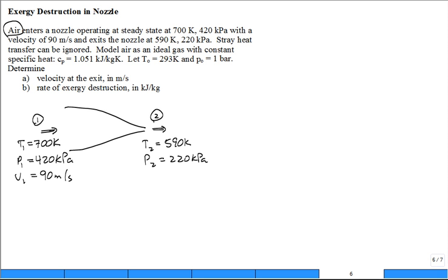Stray heat transfer can be neglected. So Q dot is equal to zero. There's no shaft work, so that's equal to W dot as well. The nozzle doesn't have any shaft work in or out. And you want to model it as an ideal gas with constant specific heat using this value for Cp. So we want to use that value of specific heat, and we don't need to go to the air tables. Use constant specific heat. Calculate the velocity at the exit. I'll go ahead and pause for a second. You write down how you're going to calculate the velocity at the exit of the nozzle.